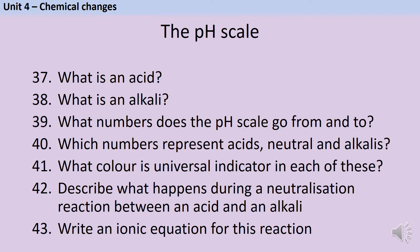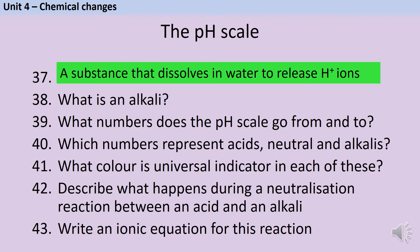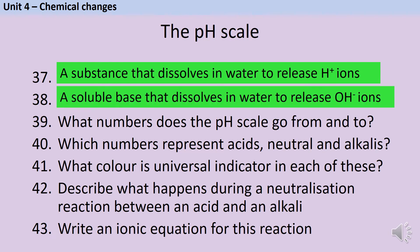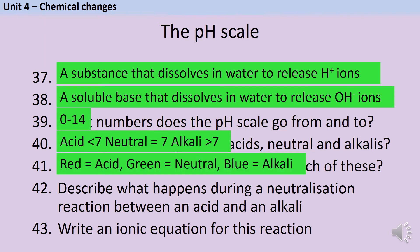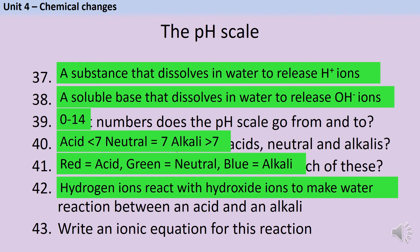In GCSE chemistry, an acid is a substance that dissolves in water to release hydrogen ions, whereas an alkali is a substance that dissolves in water to release hydroxide ions. The pH scale goes from 0 to 14, where numbers below 7 are acids, numbers above 7 are alkalis, and 7 is the neutral point. Universal indicator is red in acids, green in neutral solutions, and blue in alkalis. During a neutralisation reaction between an acid and an alkali, the hydrogen ions react with the hydroxide ions to make water, represented by the ionic equation: H⁺ + OH⁻ → H₂O.